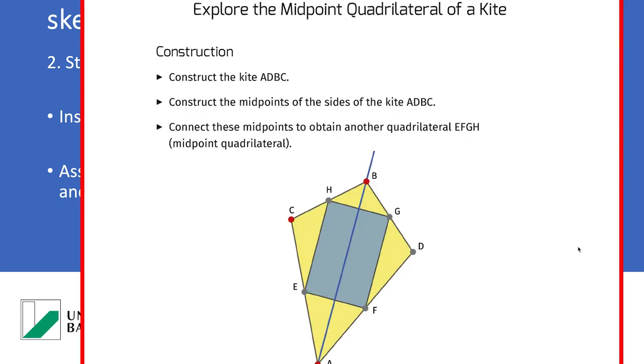The first part is a construction part. Here the students should create the kite in this example. First they construct the kite using the reflection gesture. Then they have to construct the four midpoints and at the end the quadrilateral of these midpoints.